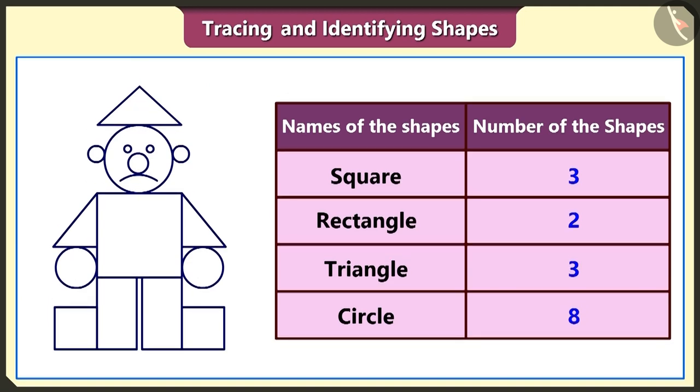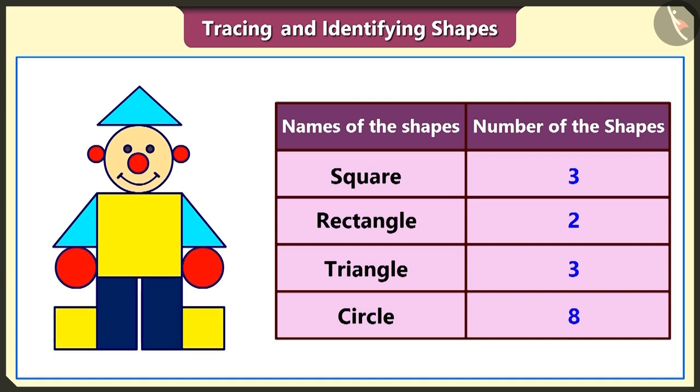We got to know that there are three squares, two rectangles, three triangles and eight circles used in the making of the doll. But why is he not smiling? Let's fill it with colors. Look, Thumpkin, it is smiling after we filled it with colors.